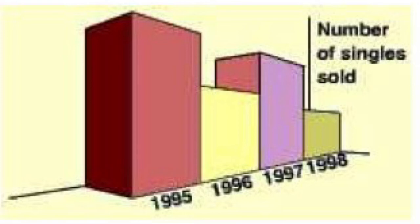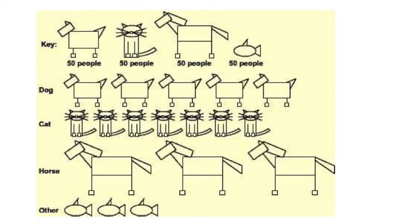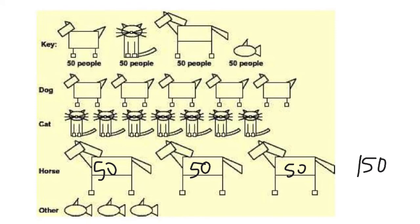Here's another type of graph — a pictograph — with a key at the top where different animals each represent 50 people. We've got dogs, cats, horses, and fish, each representing 50 people apiece. When you first look at this it seems like you might have the most horses, but if you know each animal represents 50 people, you just have a total of 150 for horses and also 150 for fish. So even though it might seem like there are fewer fish than horses, you've got the same total number. It's just a matter of how big the sizes are for those animals in the key.